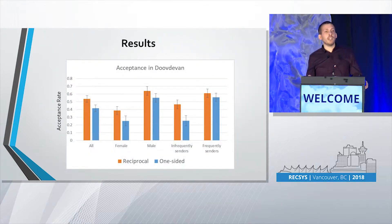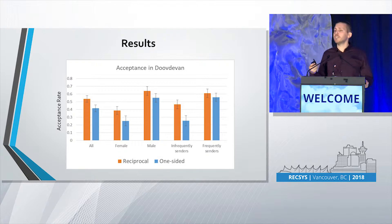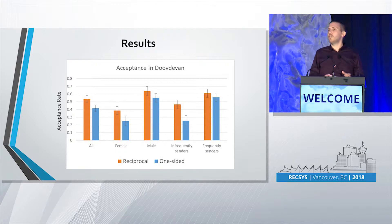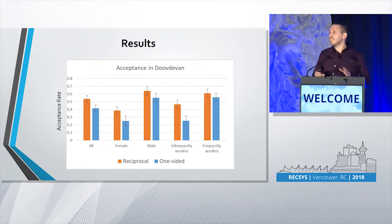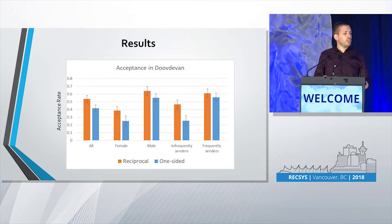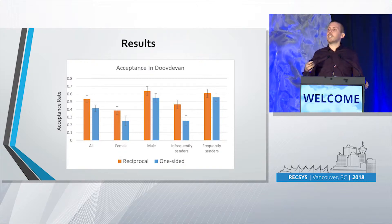The results in the operational online dating site showed that in the whole population, the reciprocal explanations outperformed the one-sided explanations — users who got reciprocal explanations accepted a lot more than users who received one-sided explanations. We also divided the users into female and male users. For female users, the difference was significant — female users who received reciprocal explanations significantly accepted more. For male users, the difference was not significant. We believe this is because the emotional cost of sending an initial message may be more prominent for female users. Additionally, among users who infrequently send messages, the acceptance of reciprocal explanations was significantly higher than one-sided explanations.